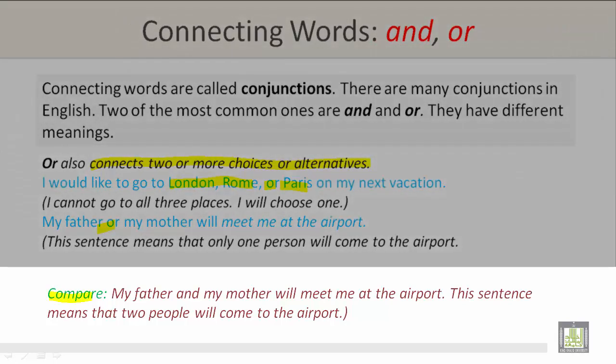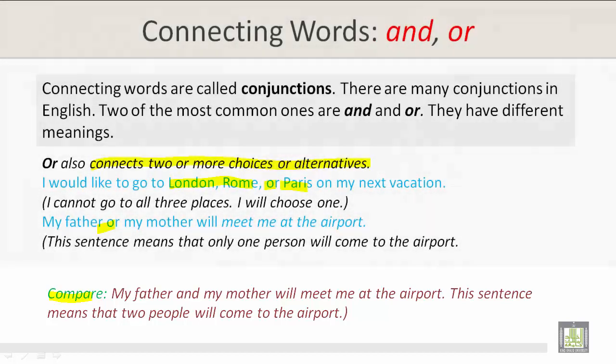Let us compare. My father and my mother will meet me at the airport. This sentence means that two people will come to the airport.